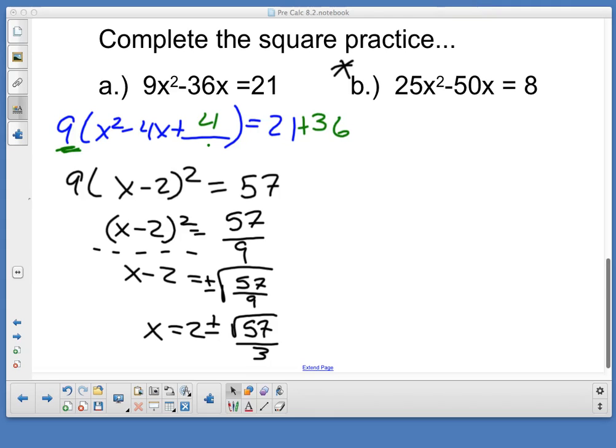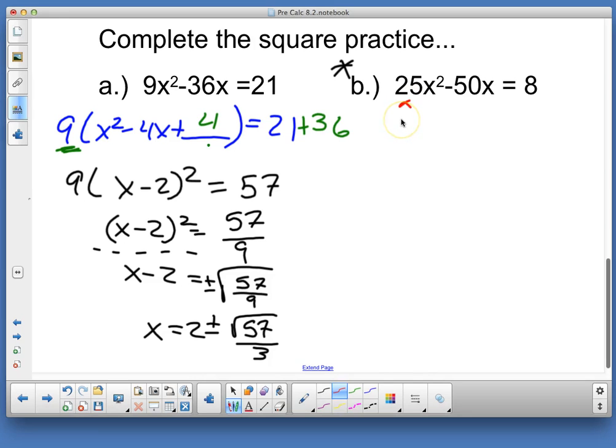So the first thing we're doing for pre-calc A2 day 2 is we're finishing up the second problem that we started yesterday, just completing the square. Now remember the rules, the steps. It's kind of a nice little dance, but it's always the same. When we're completing the square, we're talking about a perfect square binomial. But we've got to have my leading coefficient be a 1. In order to do that, I've got to factor out the 25.